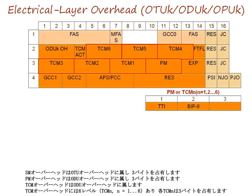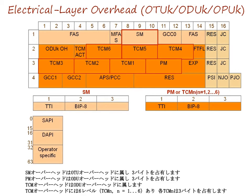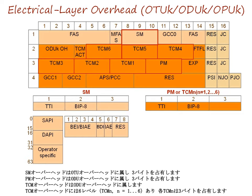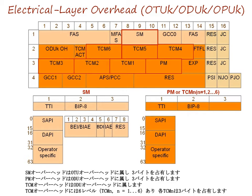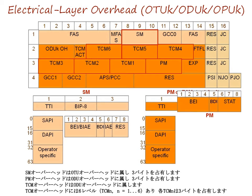An SM overhead belongs to an OTU overhead and occupies 3 bytes. A PM overhead belongs to an ODU overhead and occupies 3 bytes. A TCM overhead belongs to an ODU overhead and has 6 levels, with each TCMN occupying 3 bytes.